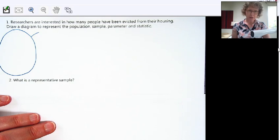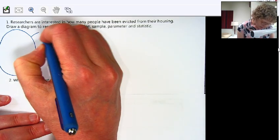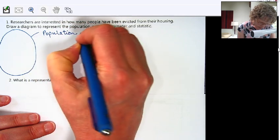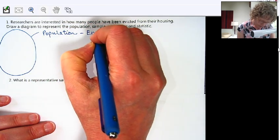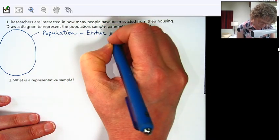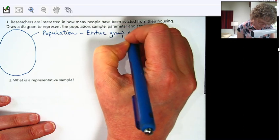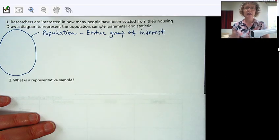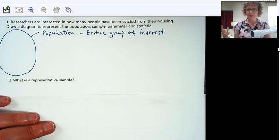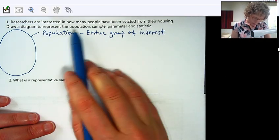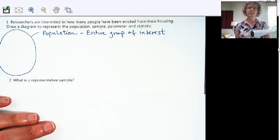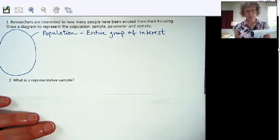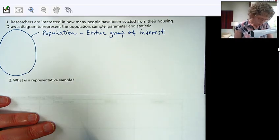It's more like an oval in my case. And this is the population, and that is the entire group of interest, everyone that would fit into this category. So how many people have been evicted from their housing?